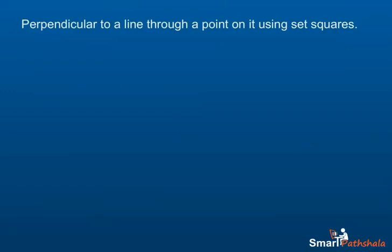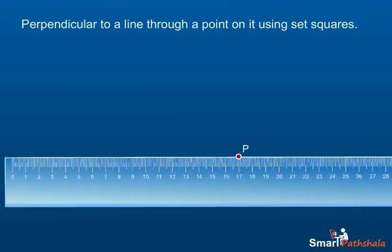Let us learn the first method for making a perpendicular. Step 1: Draw a line of any length. Mark a point P where perpendicular is to be drawn. Step 2: Take a ruler. Keep it along the line drawn.